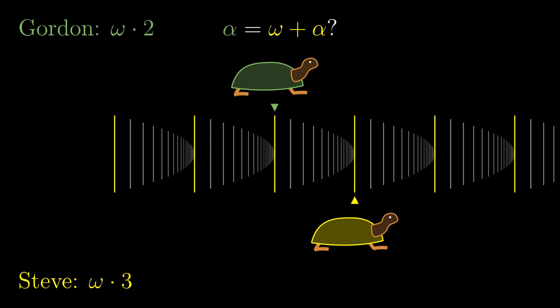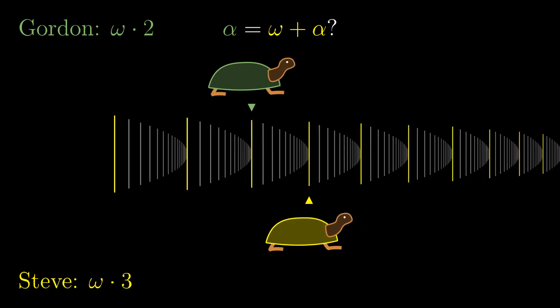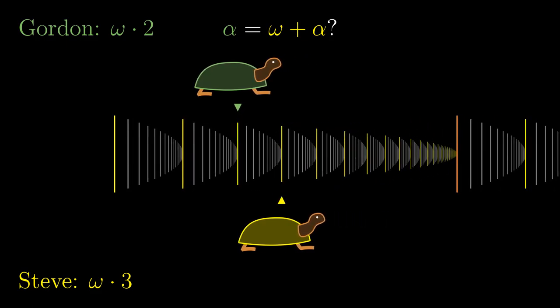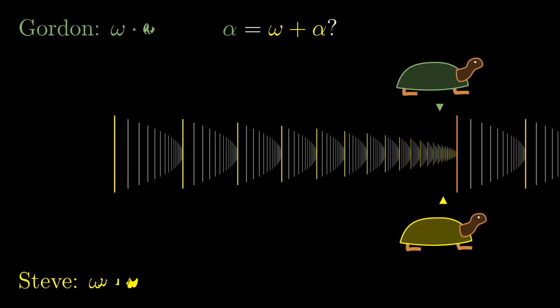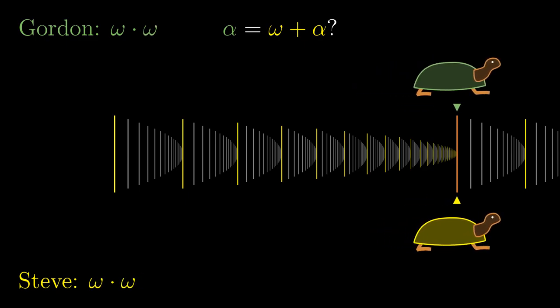Alright, here is the answer. If we focus just on the yellow bars, which are finite multiples of omega, we translate the current problem to the previous one. Both turtles meet at the supremum of these indices called, reasonably enough, omega times omega. So the answer to our question is this ordinal omega times omega.